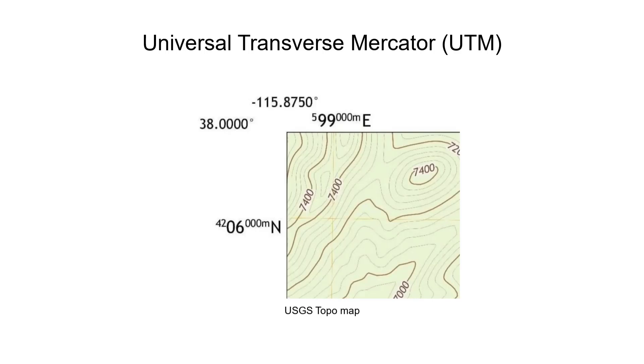Topographic maps often display both latitude, longitude and UTM grid coordinates. UTM coordinates are easy to use and they work with almost all GPS devices.